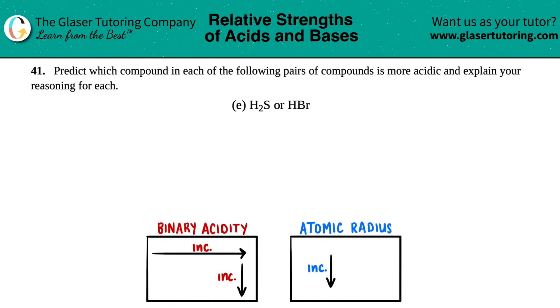Number 41, predict which compound in each of the following pairs of compounds is more acidic and explain your reasoning for each. So then we have letter E. In this case, we have to figure out whether H₂S or HBr is more acidic.